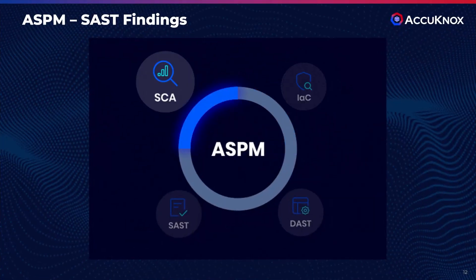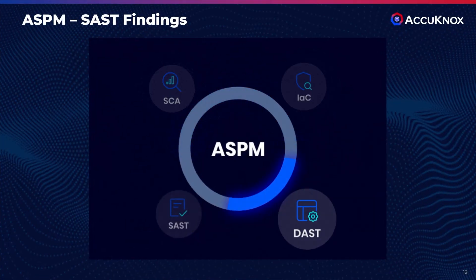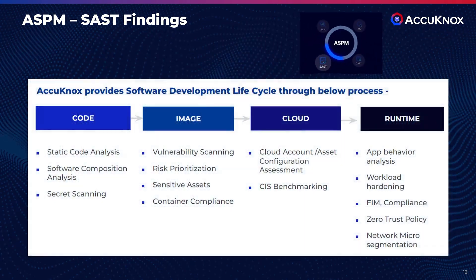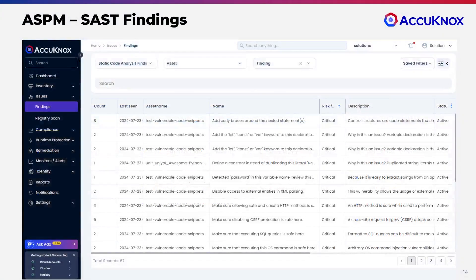ASPM delivers application security at multiple levels: at code level, at build level, at deployment level, and at pre-runtime level. At the coding phase, SAST security helps you analyze security vulnerabilities and secrets exposure in your code. In short, it protects what you build.